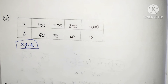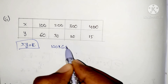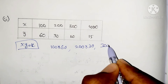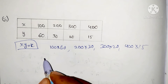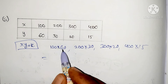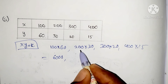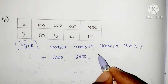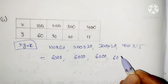This is the first question. We check: 100×60 = 6000, 200×30 = 6000, 300×20 = 6000, 400×15 = 6000. Since all products are equal to 6000, these values are in inverse proportion.